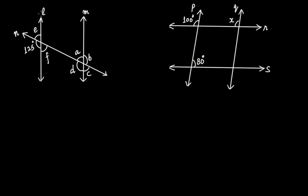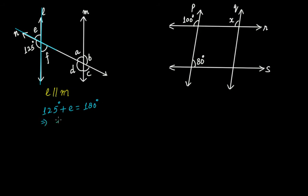In this case, L and M are two parallel lines, with N as the transversal line, and you have to find the values of variables A, B, C, D, E, and F. Focusing on the intersection, 125 degrees and angle E are forming a linear pair. So 125 plus E equals 180 degrees. Solving this, E equals 180 minus 125, which is 55 degrees.